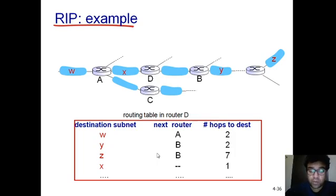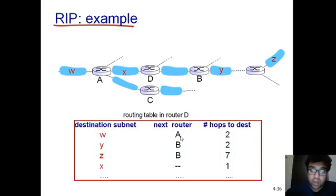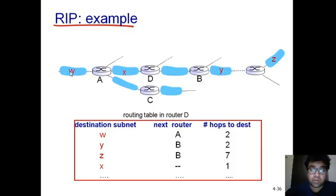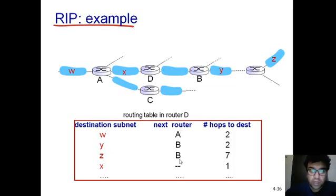Data forwarding means placing a packet from the input port to the output port of a router using the routing table. If D needs to reach W, it places its data on the link connected to router A, which then forwards the packet to destination subnet W. The next-router column tells the router which outgoing link to use to forward packets toward each destination.